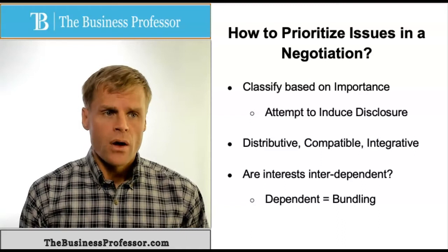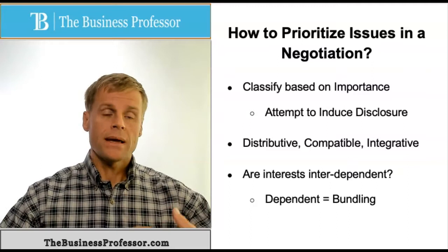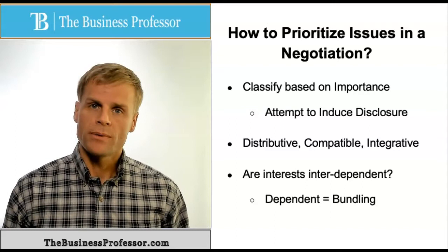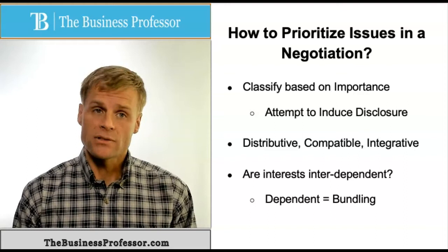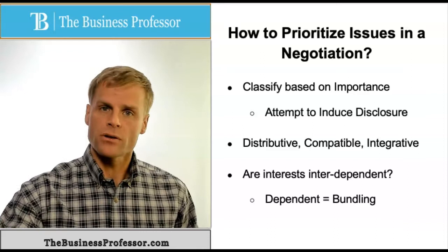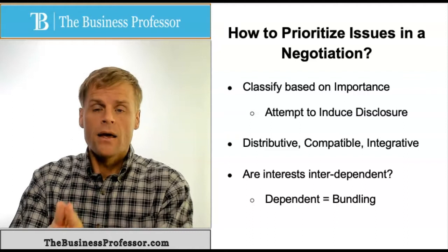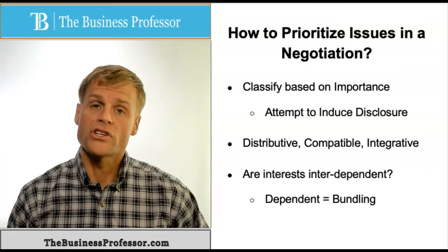When you have integrative and compatible interests, it makes sense to put those at the very beginning — deal with those first. Then you bundle in distributive issues as a form of concession, where one party gives up on an interest in a way that allows the other party to gain more value in that interest, in exchange for doing better in others. This allows you to loop distributive interests in with compatible and integrative ones, making the whole negotiation integrative in nature.